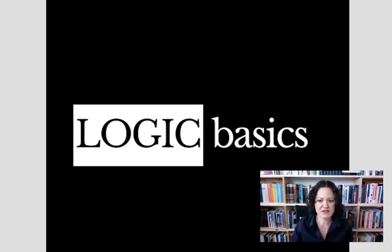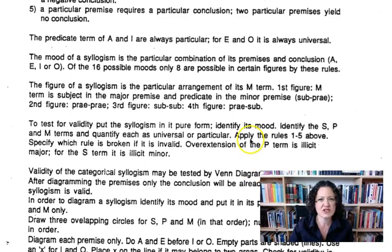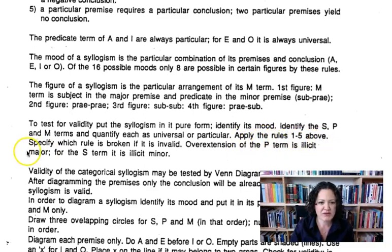Welcome back to Logic Basics. We are going to start talking about testing categorical syllogisms for validity. To test for validity, put the syllogism in its pure form, identify its mood, identify the S, P, and M terms, and quantify each as universal or particular — those are the little u's and little p's. Then apply rules 1 through 5, noting specifically which rule is broken if the syllogism is invalid.